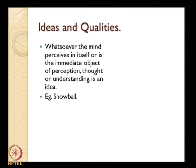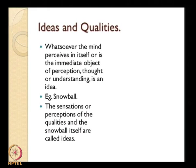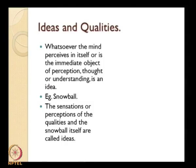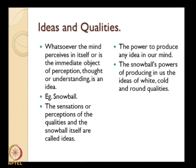Take the example of a snowball: you have white color, a sensation of cold, and so on. These sensations are perceptions of qualities like whiteness, coldness, and the snowball itself — all called ideas. The idea of a snowball is a complex idea; the simple ideas are the color, the cold sensation, and so on. When we talk about qualities, the power to produce any idea in my mind is a quality — the snowball's power of producing in us the ideas of white, cold, and round are qualities that the object in the outside world has, and these qualities produce ideas in my mind.